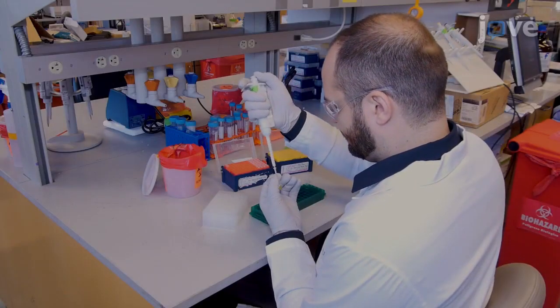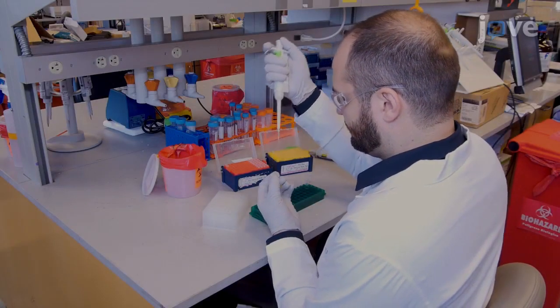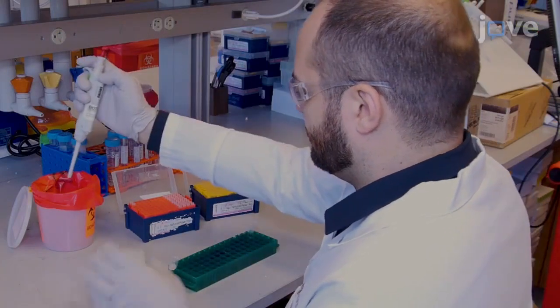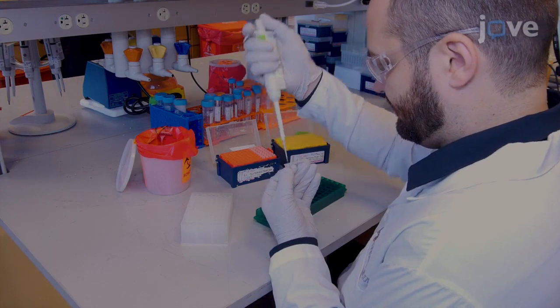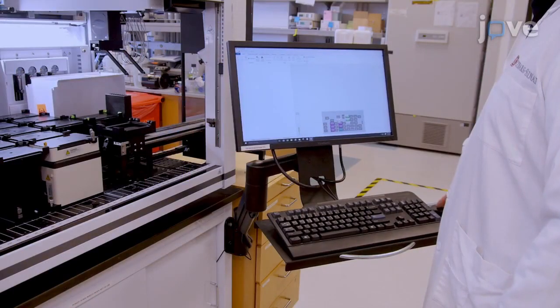Before beginning the analysis, add 5 microliters of pooled healthy human plasma into a 96-round deepwell polypropylene plate. When all of the samples have been loaded,